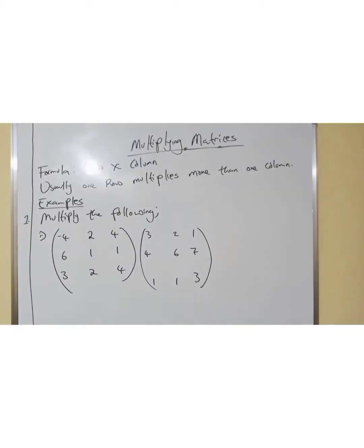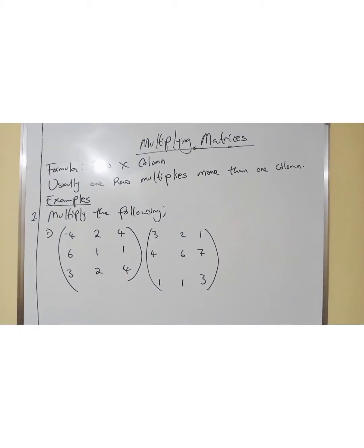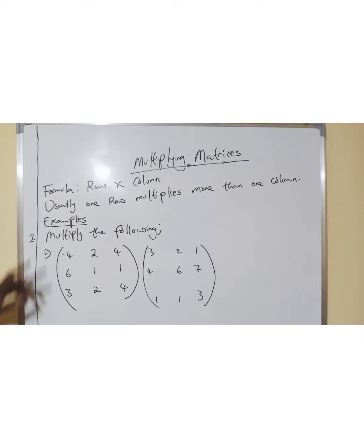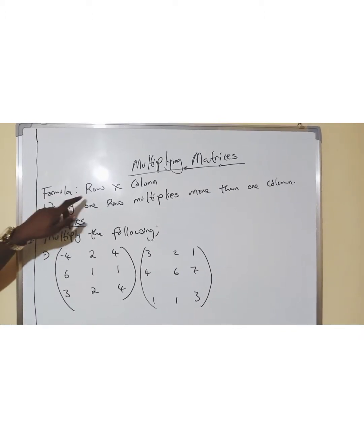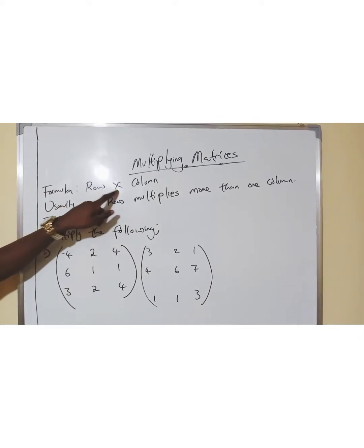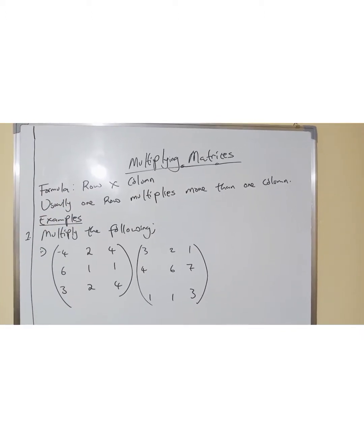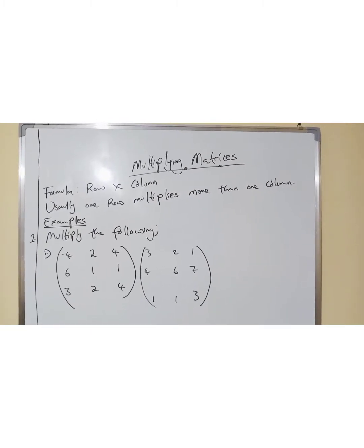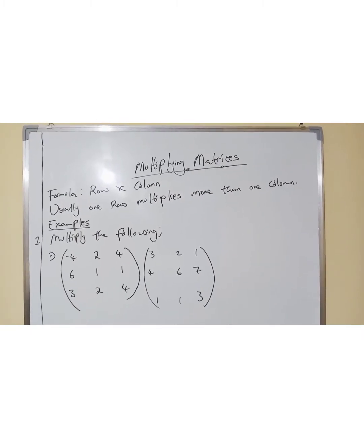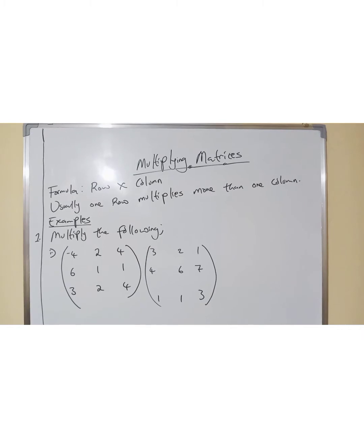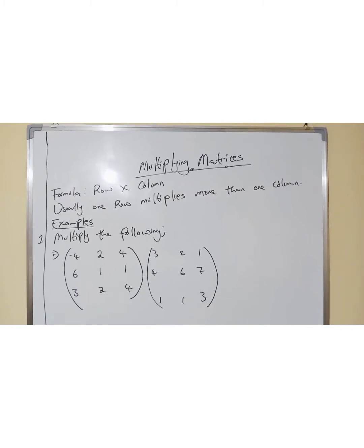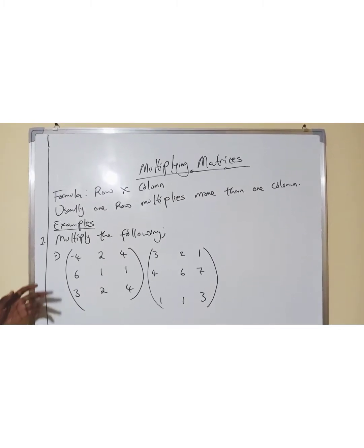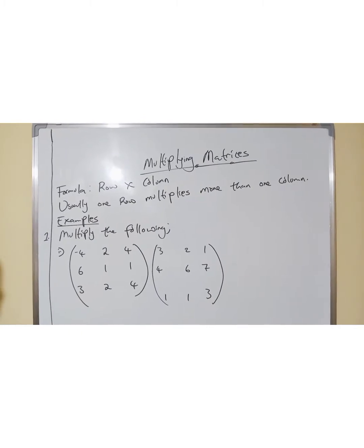Matrices. We're looking at multiplying matrices. So, this is a formula. The formula is row times column. Row times column. And here's an important part: usually, one row multiplies more than one column. So, let's look at the examples.